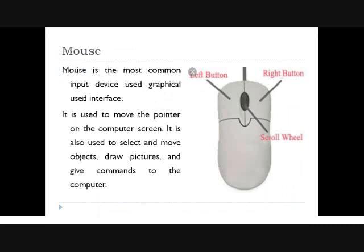The next input device is the mouse. Mouse is a very common input device mostly used for graphical user interface. The small icons you see on screen are graphics, and to interact with them you need a mouse to select or move them. With the help of a mouse you can draw pictures and give commands to the computer. It is a pointing input device — you can see the right mouse button, left mouse button, and scroll wheel on the mouse.